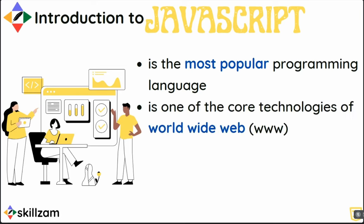JavaScript is one of the core technologies of the World Wide Web. For web development and web technologies, the top three are: HTML — the very first basis of the worldwide web, a hypertext markup language; second is CSS, cascading style sheets, which provides styling to your web page; and the third core technology is JavaScript.